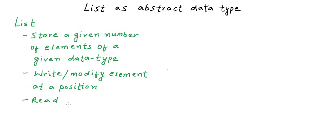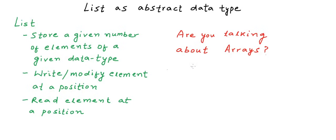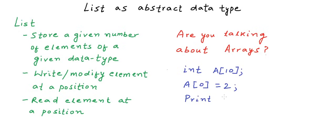We should be able to write or modify an element at any position in the list, and we should be able to read an element at a particular position. If I ask you for an implementation of such a list, and you have taken a basic introductory programming course, you'd say: an array gives us all these features. We can create an array of any data type — for example, an integer array — declare it with a size parameter, and access elements as a[0], a[1], etc. Array is a data structure that gives us an implementation for this list.